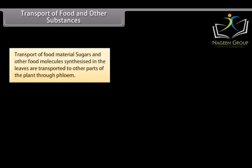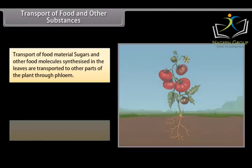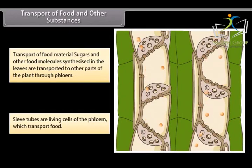Transport of food and other substances: Sugars and other food molecules synthesized in the leaves are transported to other parts of the plant through phloem. Sieve tubes are living cells of the phloem which transport food.